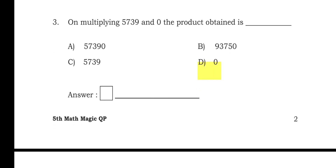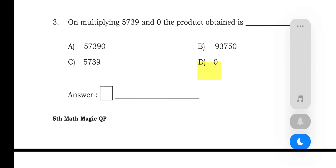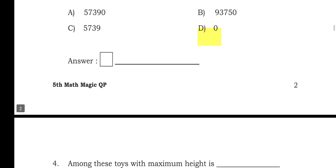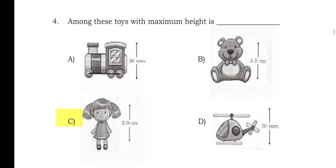Question 3: on multiplying 5739 and 0, the product obtained is — whatever we multiply with 0, the answer is 0 itself. Option D is the right answer: 0.